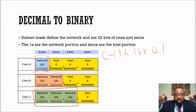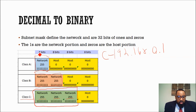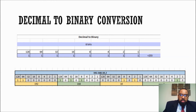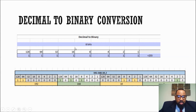Now, decimal to binary conversion. Each octet is 8 bits, and each bit position is broken down into 128, 64, 32, 16, 8, 4, 2, and 1 — powers of 2. When you add this all up to get your subnet mask, you get 255 if all the 1s are on. If you have a 1, it's on; if you have a 0, it's off. If they're all on, it's 255. If they're all off, it's 0.